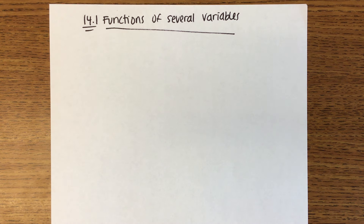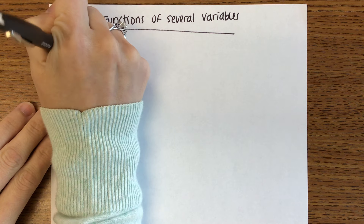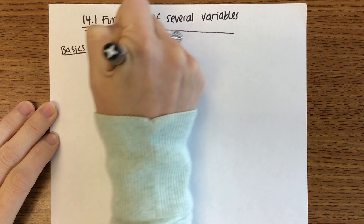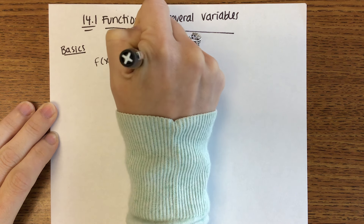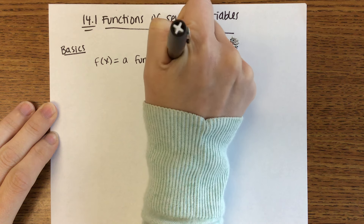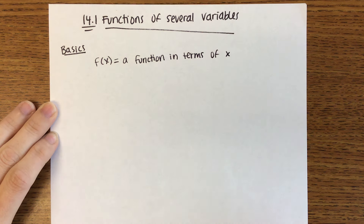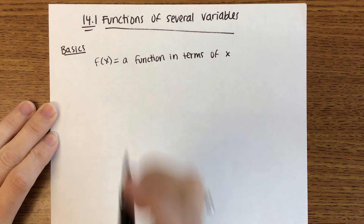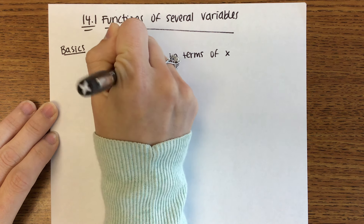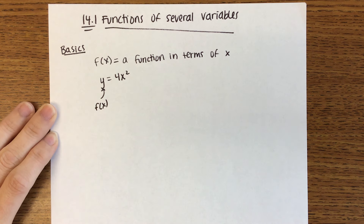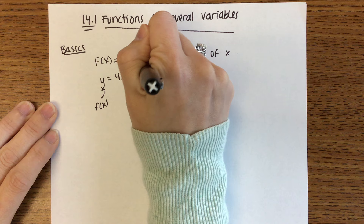This is functions of several variables. Let's start out with the basics. Notation you've seen before is f of x. f of x represents a function in terms of x. For example, you might see something like y equals 4x squared. y in this case is the same as f of x. This is a function of one variable.